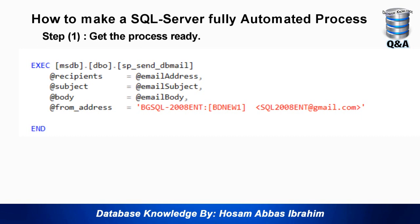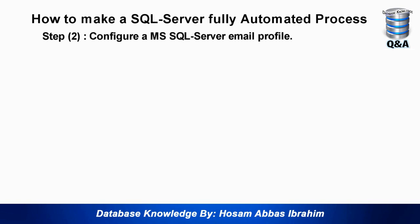The minimum parameters for sp_send_dbmail are: recipients (the email address we declared above), the subject (set above), and the body (set in the two different cases). We also provide the from_address — the address the email will be sent from. Then we close with END, and the stored procedure is ready.